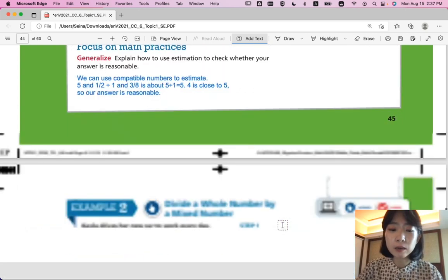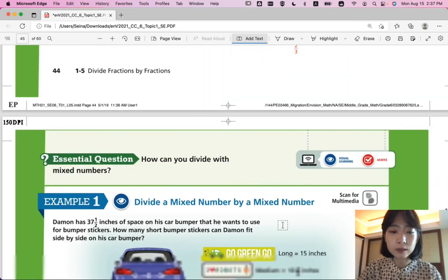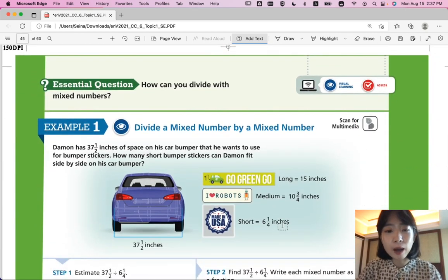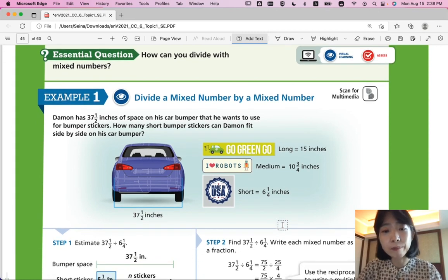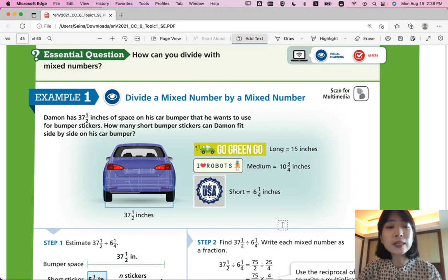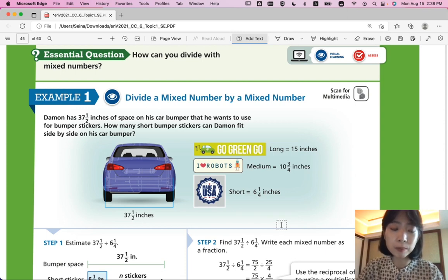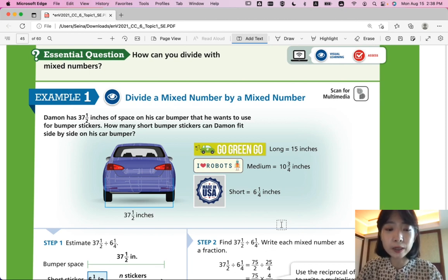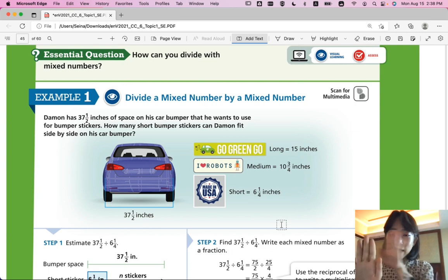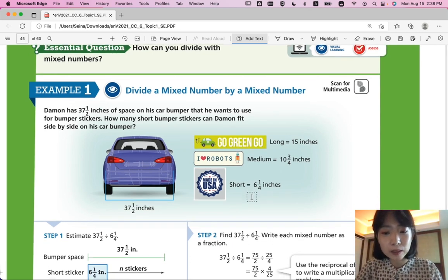Alright, let's start with example 1. So, throughout this lesson, think about how we can divide with mixed numbers. Example 1. Divide a mixed number by a mixed number. Damon has 37 and 1 half inches of space on his car bumper that he wants to use for bumper stickers. How many short bumper stickers can Damon fit side by side on his car bumper? He's going to put it side by side, like that.